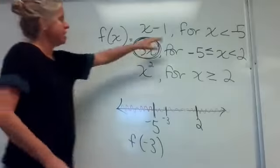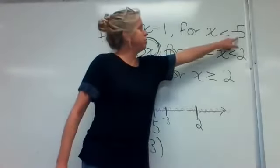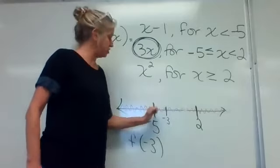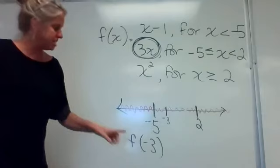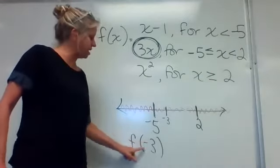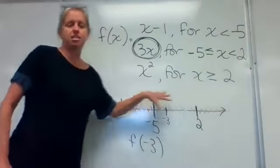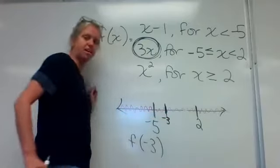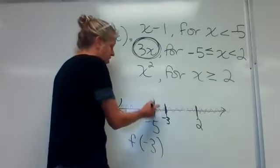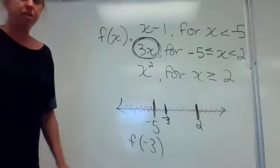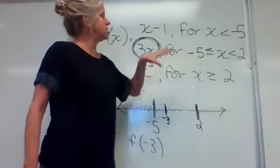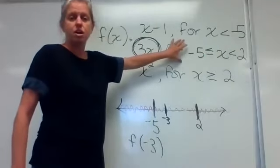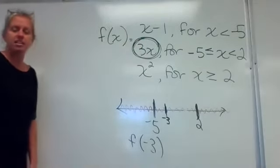Let me walk through this again. You've got your three parts. Put the two numbers represented — negative five and two — on the number line. The problem tells you to find where negative three falls. Negative three is just a little to the right of negative five, so it falls in between negative five and two, which corresponds to the section where 3x applies.